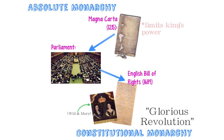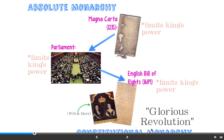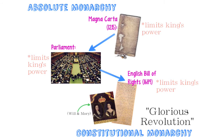Let me reiterate: the Magna Carta limits the king's power, Parliament limits the king's power, and the English Bill of Rights also limits the king's power. All three of these things limit the king's power. When this event occurs — going from absolute monarchy to constitutional monarchy in 1689 with the Bill of Rights being signed — it's called the Glorious Revolution because no blood is shed. There's a whole new type of government in England because of the English Bill of Rights and nobody died because of it.